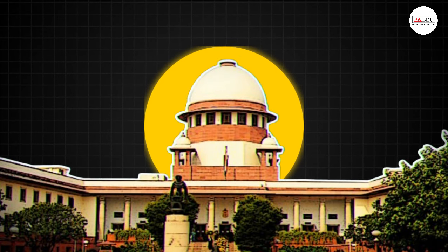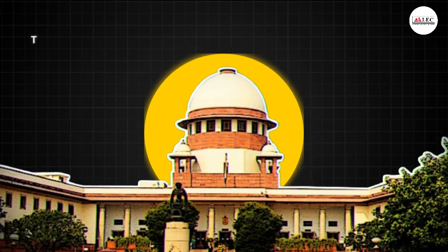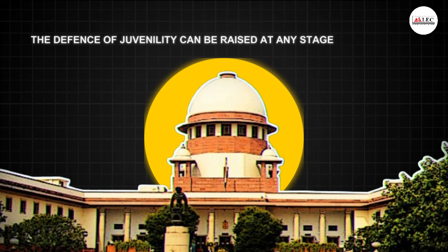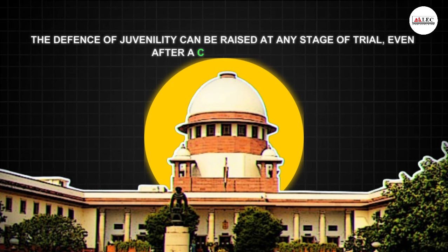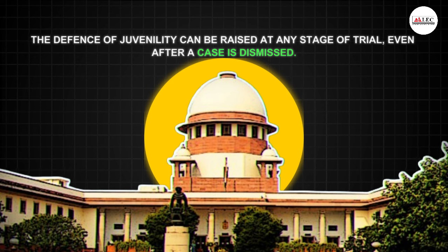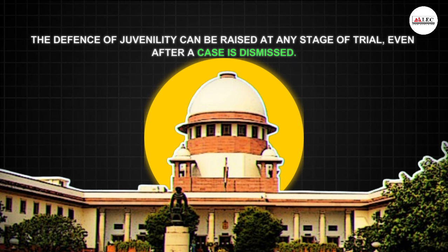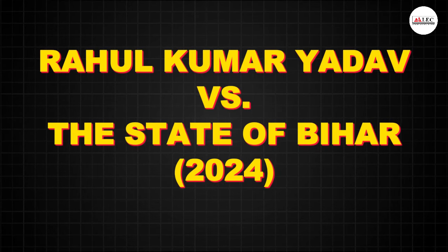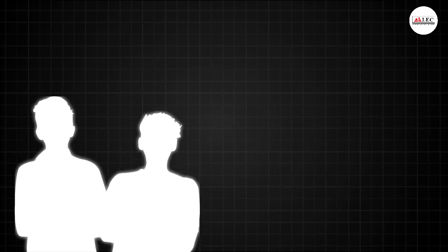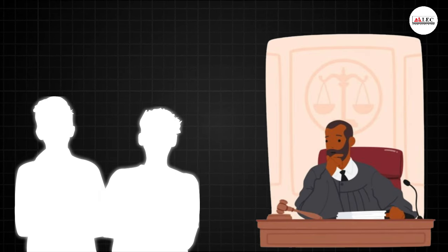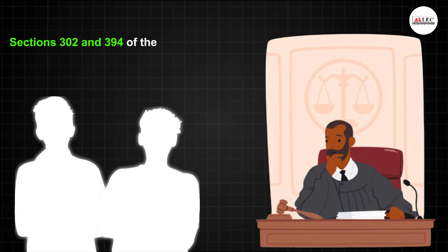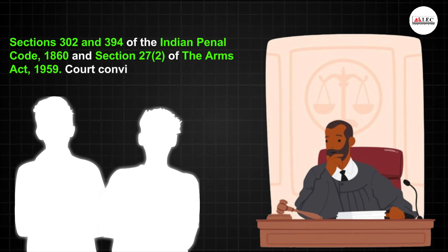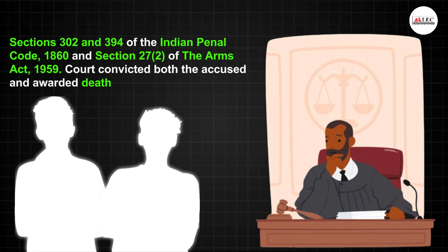In this case, the Supreme Court said that the claim of juvenility can be taken up at any stage of the trial. Let's understand the background of this case. This was the matter of Rahul Kumar Yadav vs the State of Bihar. Rahul Kumar Yadav and the co-accused were charged under Indian Penal Code Sections 302 and 394, and the Arms Act 1959, Sections 27 and 2.